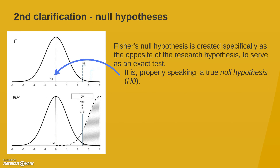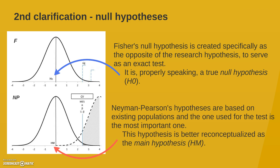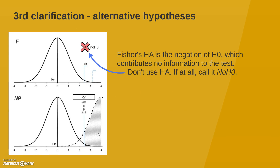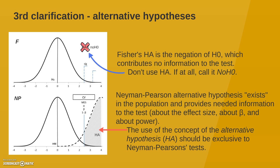The second clarification has to do with the null hypothesis. In Fisher's case, the null hypothesis is created specifically as the opposite of the research hypothesis to serve as an exact test — so calling it the null hypothesis is appropriate. In the case of Neyman-Pearson, the hypotheses are based on existing populations and the one used for the test is the most important one. Therefore, this hypothesis is better re-conceptualized as the main hypothesis. Fisher has no proper alternative hypothesis — it is merely a negation of the null hypothesis, contributing no information to the test, so we don't need to use it. If at all, call it the negation of the null hypothesis. With Neyman-Pearson's alternative hypothesis, however, it exists in the population and provides important information to the test — therefore the concept of the alternative hypothesis should be exclusive to Neyman-Pearson's procedure.